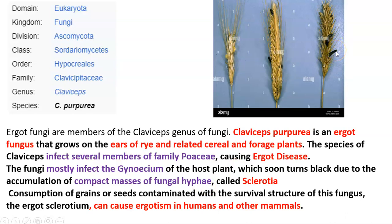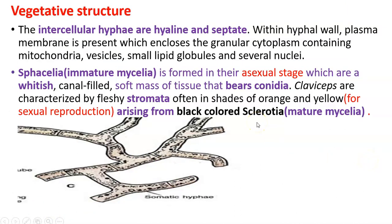This black compact mass of hyphae is called sclerotia, which replaces the seed and pops out of the floret of the particular cereal. If you do not separate the fungal-infected grains and consume them, you will be affected by this ergot sclerotium and contract ergot disease — so we have to be mindful of that. Coming to the vegetative structure: as in many other fungi, there is an intercellular mycelium which is segmented, septate, and multi-nucleate.